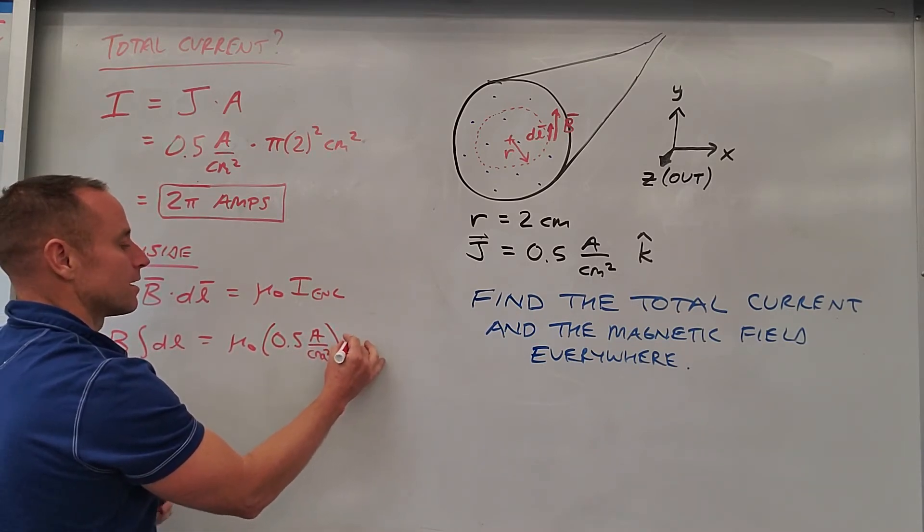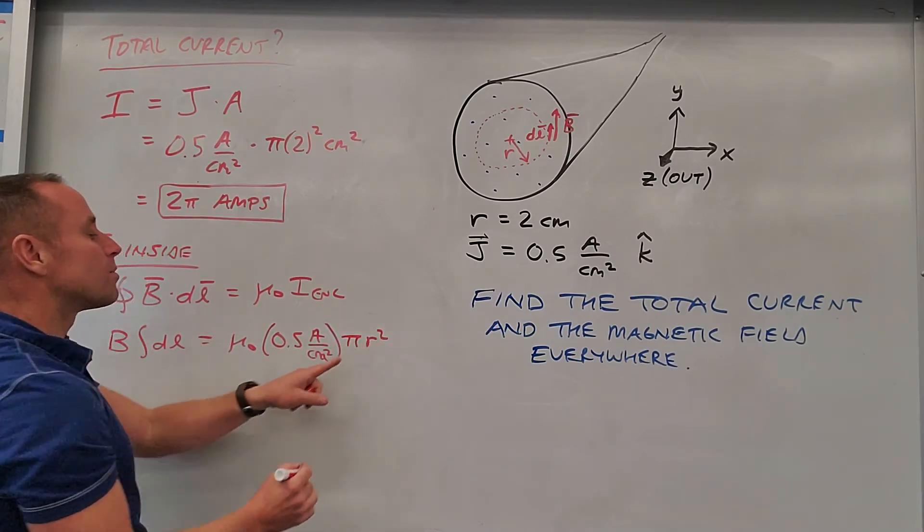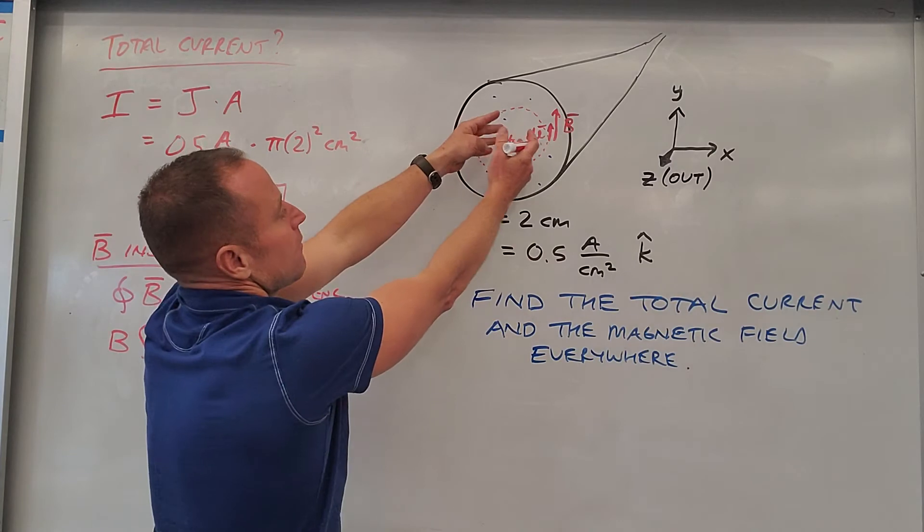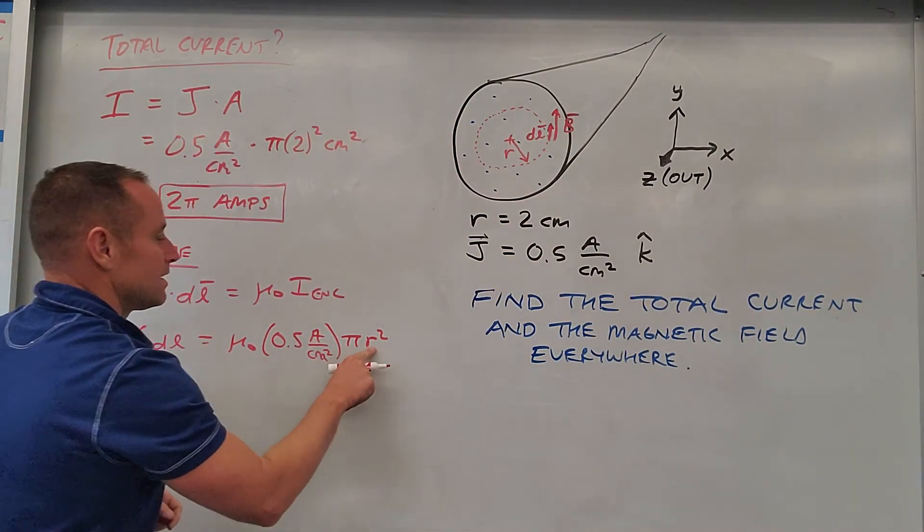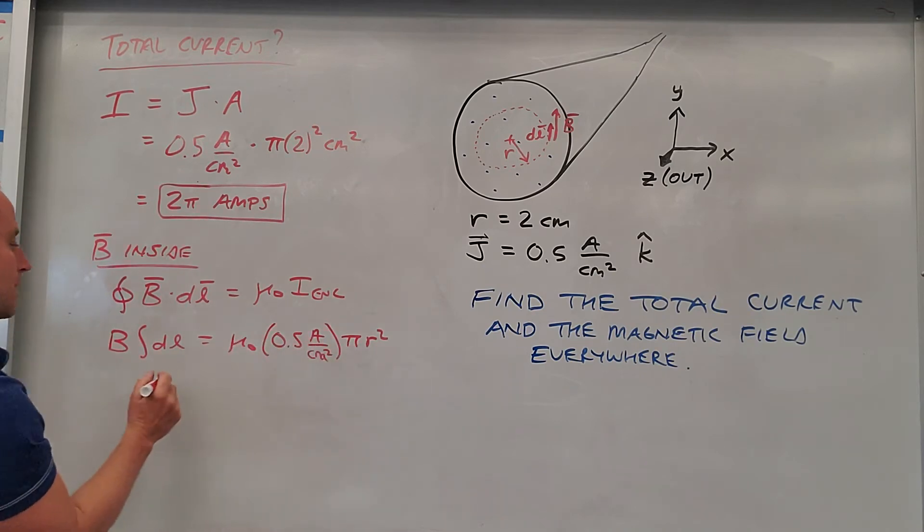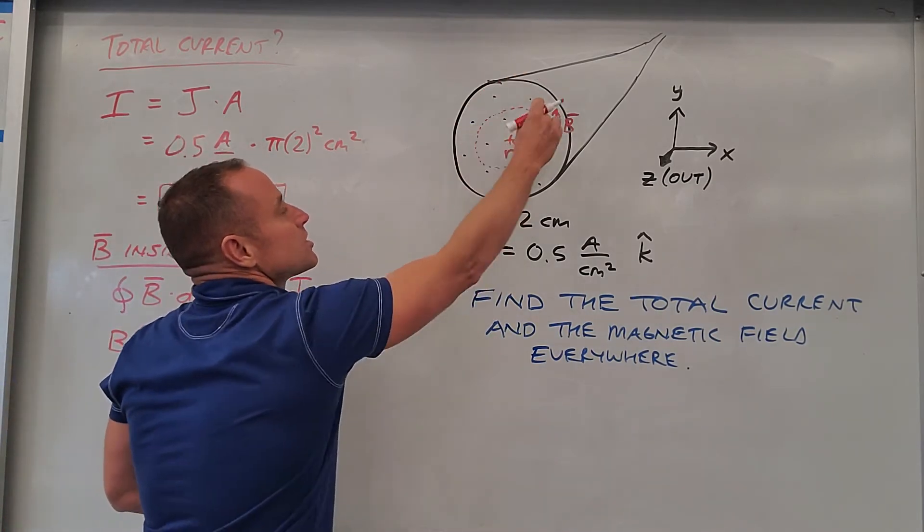But then our area is going to be πr² with an arbitrary r, because the amount of current we capture actually depends on r. So then we have B times